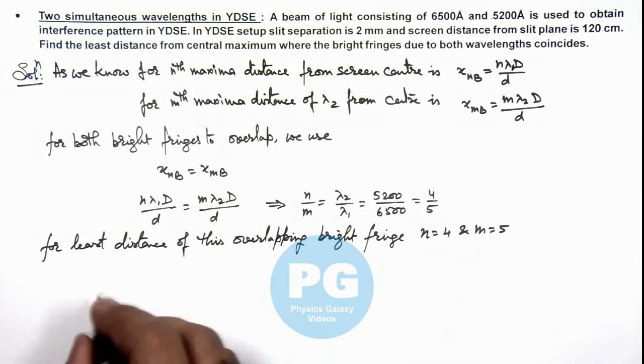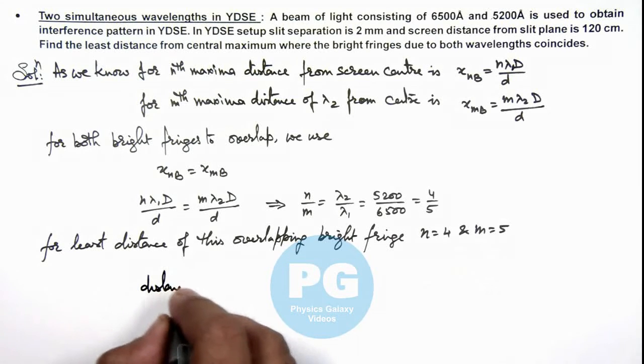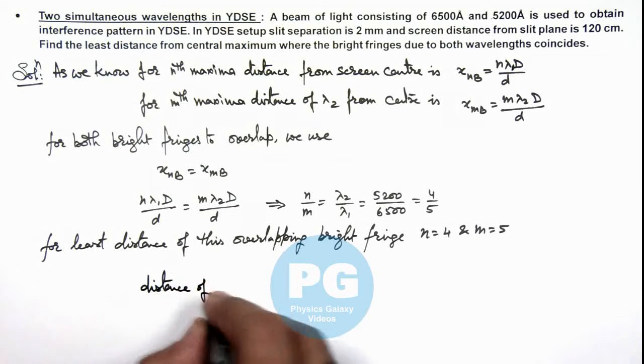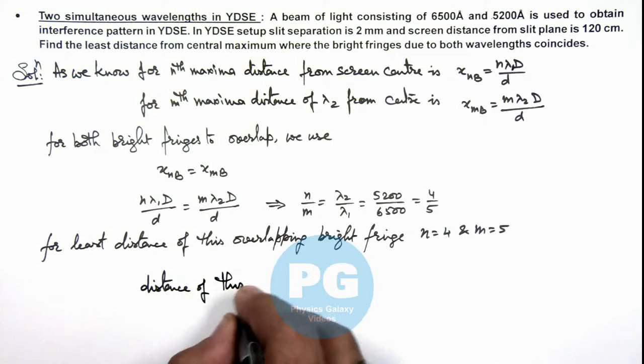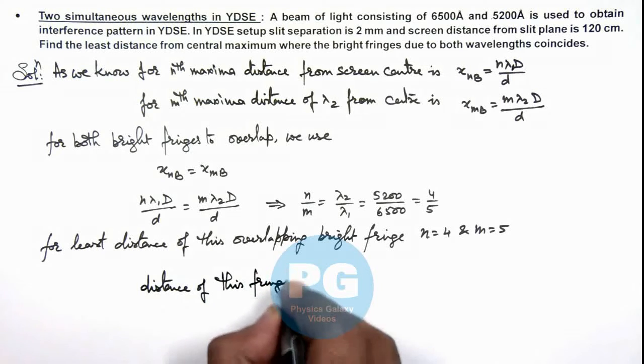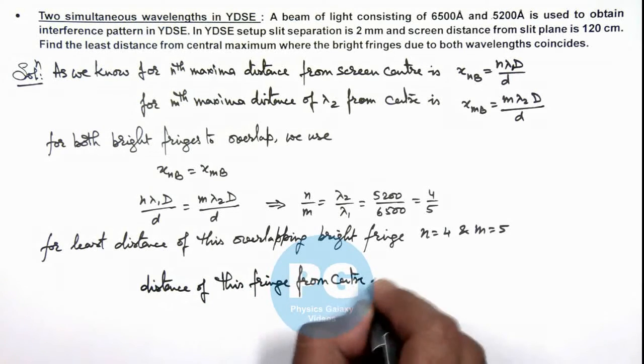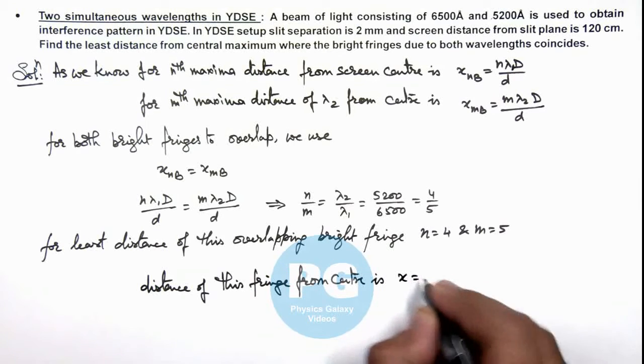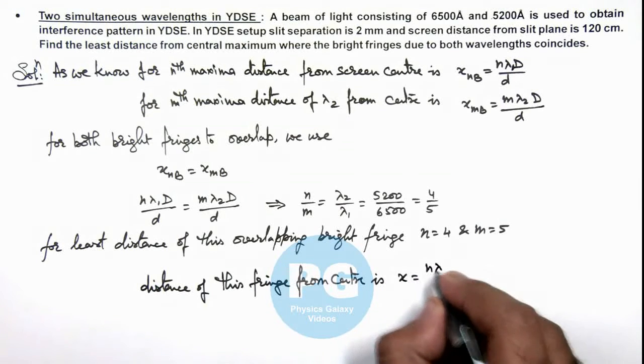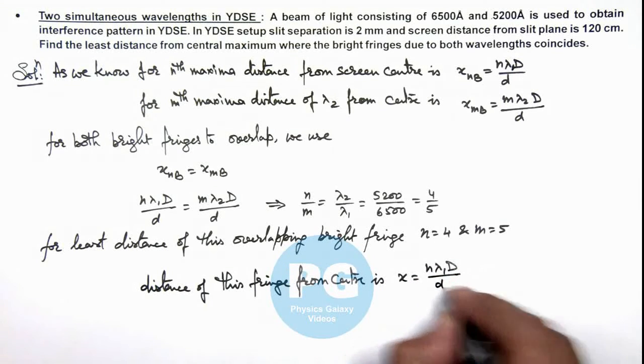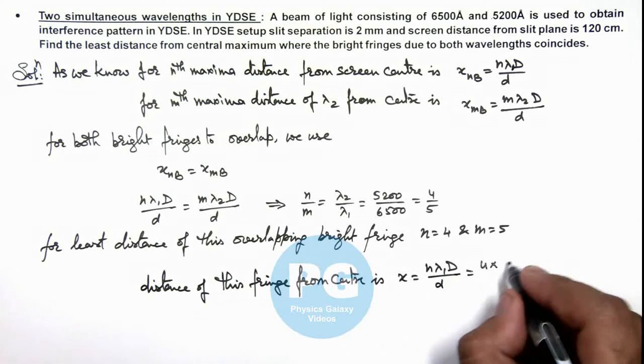Then we can directly calculate the distance of this fringe from center is, this x we can write as n lambda 1 D by small d, so this is 4 times lambda 1 is 6500 into 10 to power minus 10.